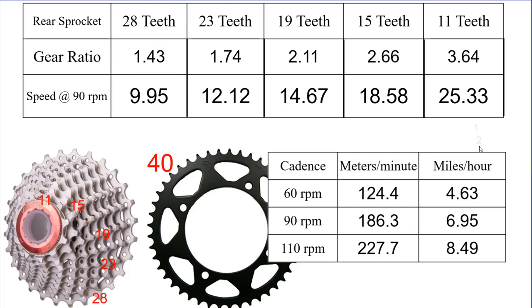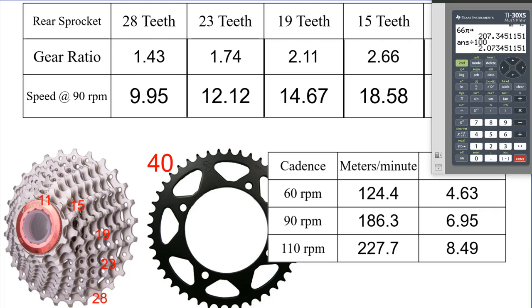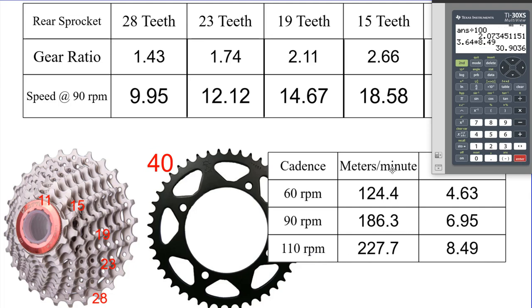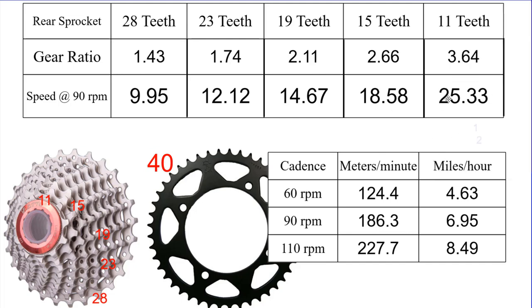Now if we wanted to see how fast we could go maxing out at 110 RPM, we take our gear ratio of 3.64 and multiply by the speed at our baseline cadence with a gear ratio of one, which was 8.49 mph. So at a cadence of 110 RPM with our highest gear ratio of 40 to 11, that gives us a max speed of about 31 miles per hour. You can see how much difference there is between 90 and 110 RPM cadence.